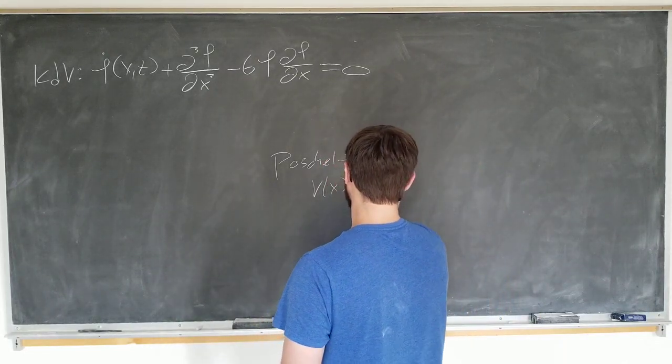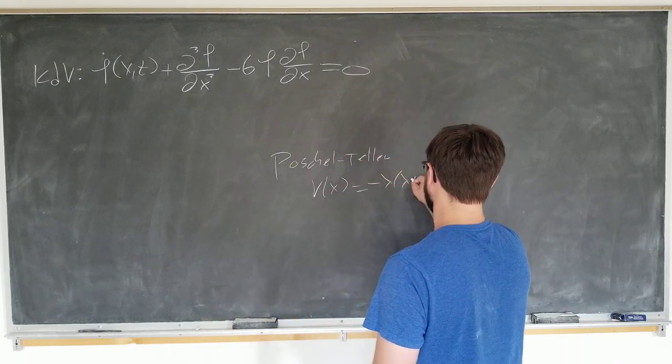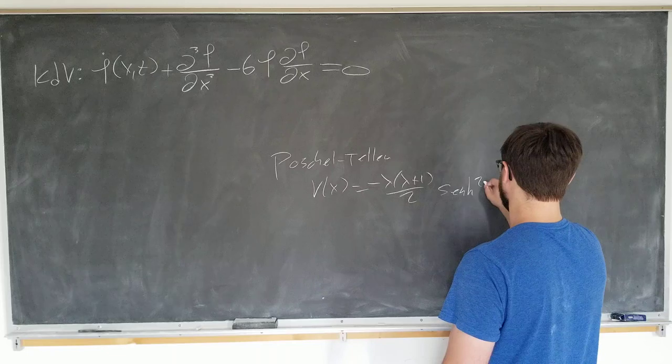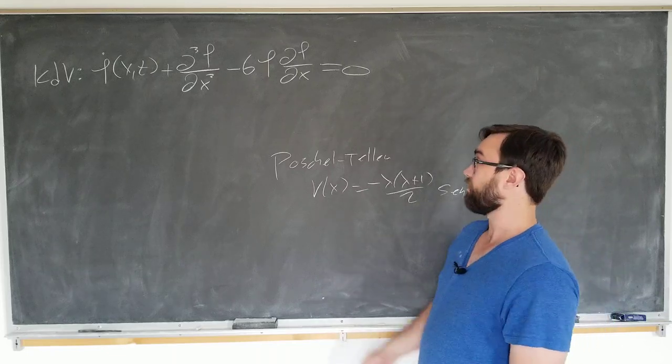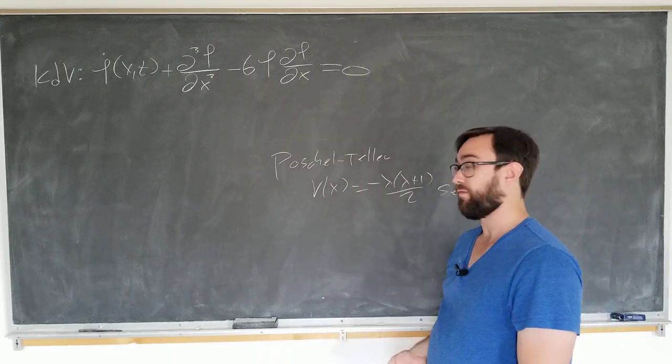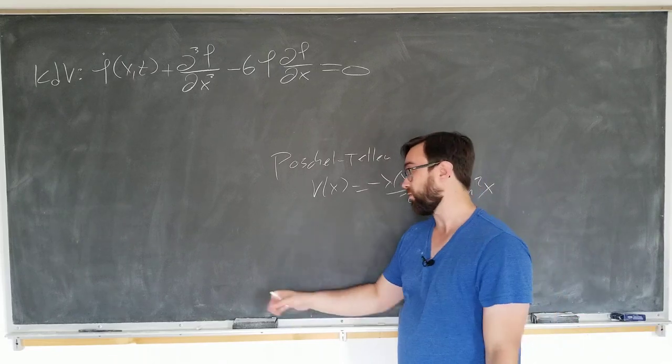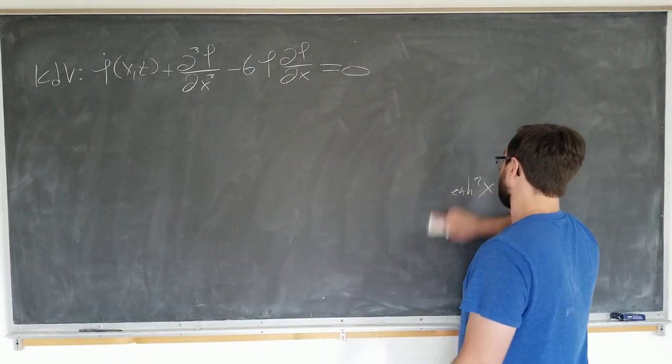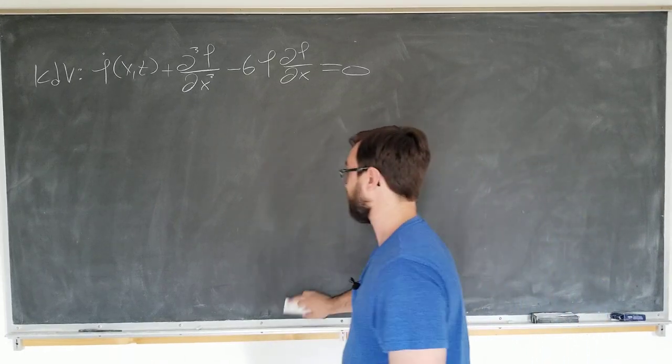The Pöschl-Teller potential was v of x is minus lambda lambda plus 1 over 2 sech squared x. The solution to this equation is similar to this, and in fact it's apparently not a coincidence, which we won't be discussing in this video. But I just want to see how that is possible in the first place.